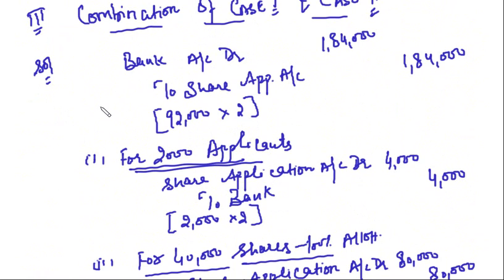So in Case 3, the directors combine all three approaches: full allotment to some applicants (basic case), rejection to some applicants (Case 1), and pro rata allotment to others (Case 2). Solve the individual cases, then combine the journal entries. It is important to understand Case 1 and Case 2 — especially Case 2 — before you can do Case 3.